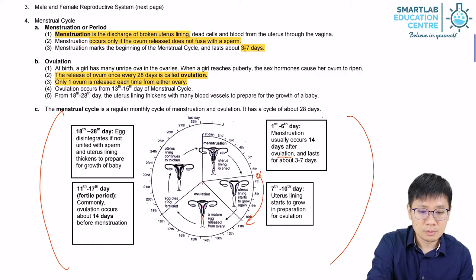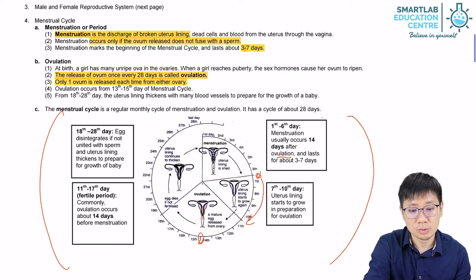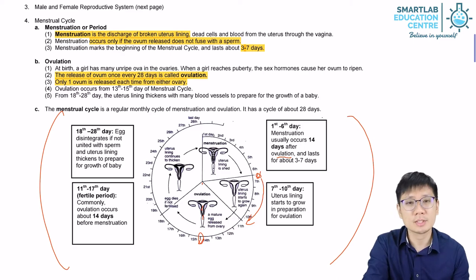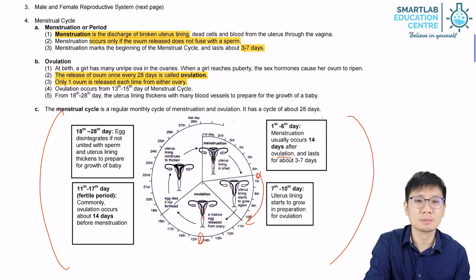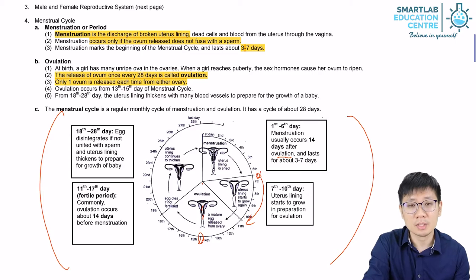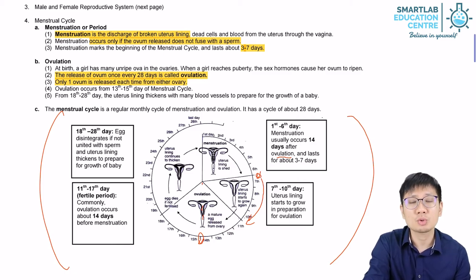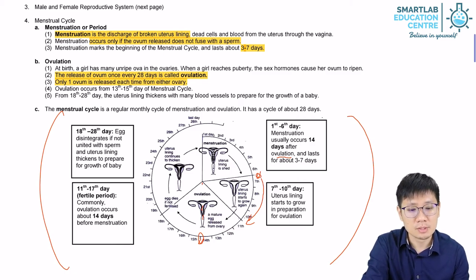Ovulation we assume occurs on day 14. In reality, ovulation can be slightly before or slightly after — it is very subjective and difficult to predict sometimes. But it is always the case that during ovulation, a mature ovum is released from one of the ovaries.